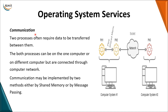The next service is communication. When you have multiple processes — and a process is a program under execution — and more than one process is executing, you may want some information to be shared among processes. These processes can be on the same network or on a different network. There should be some mechanism to transfer data from one process to another, so we either use shared memory or message passing.